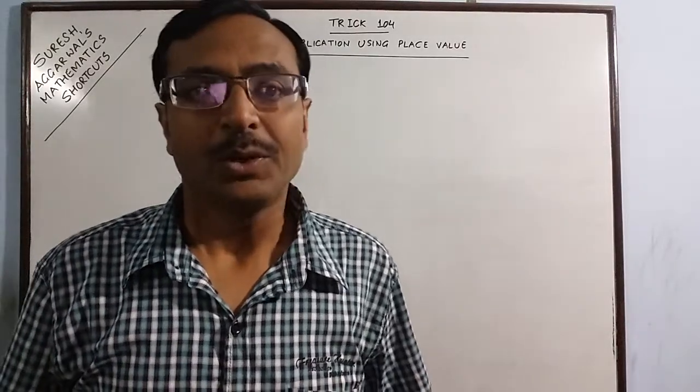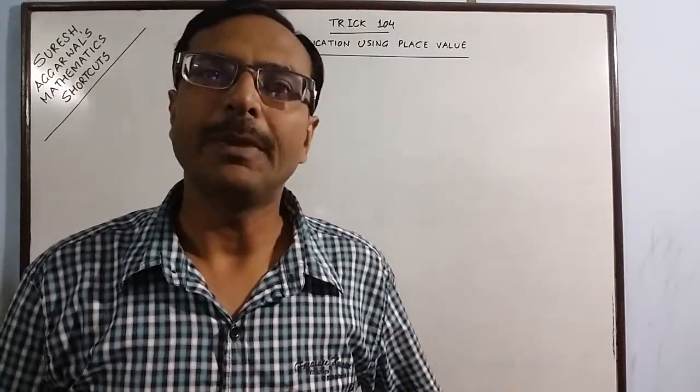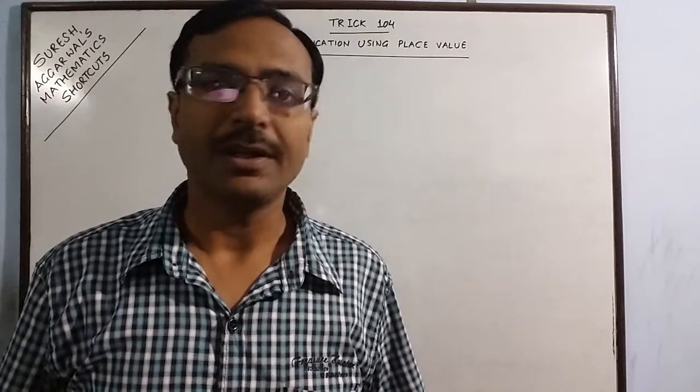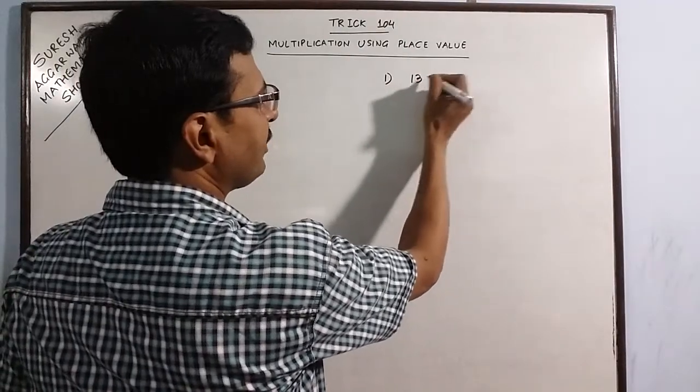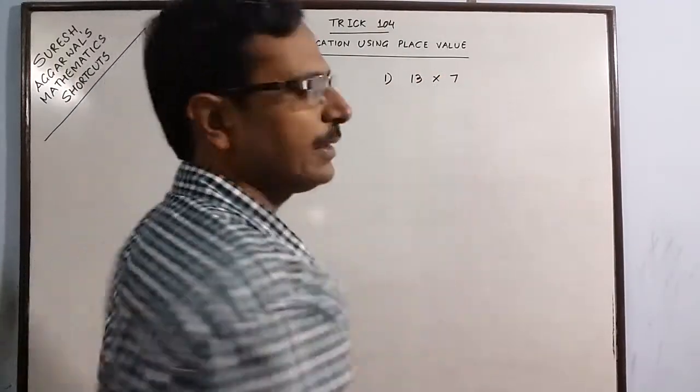Hello friends, today we are going to learn how we can multiply numbers using the place value. To understand this, let us take this example wherein we have to multiply 13 by 7.